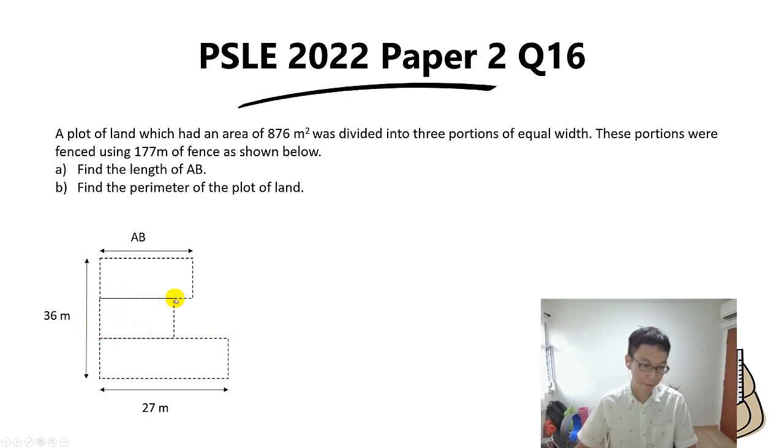Equal width means all three widths here are the same. Keep in mind that the dotted line represents the fence. For part A we want to find the length of AB, and for part B we want to find the perimeter of the plot of land.